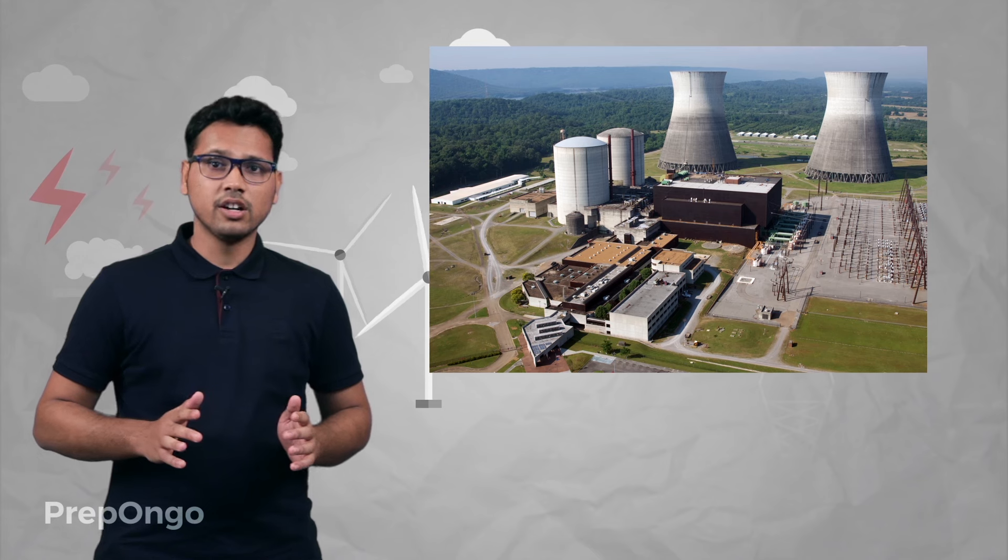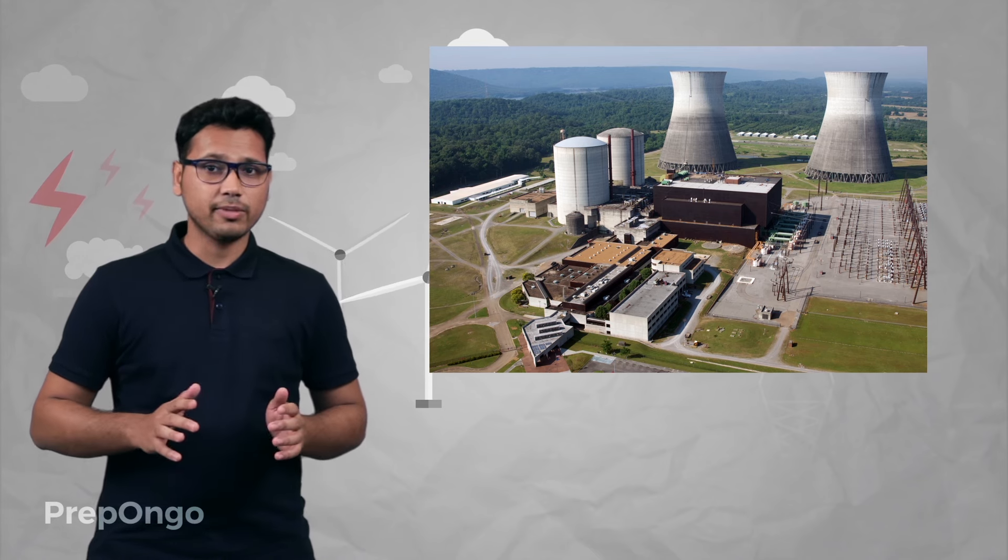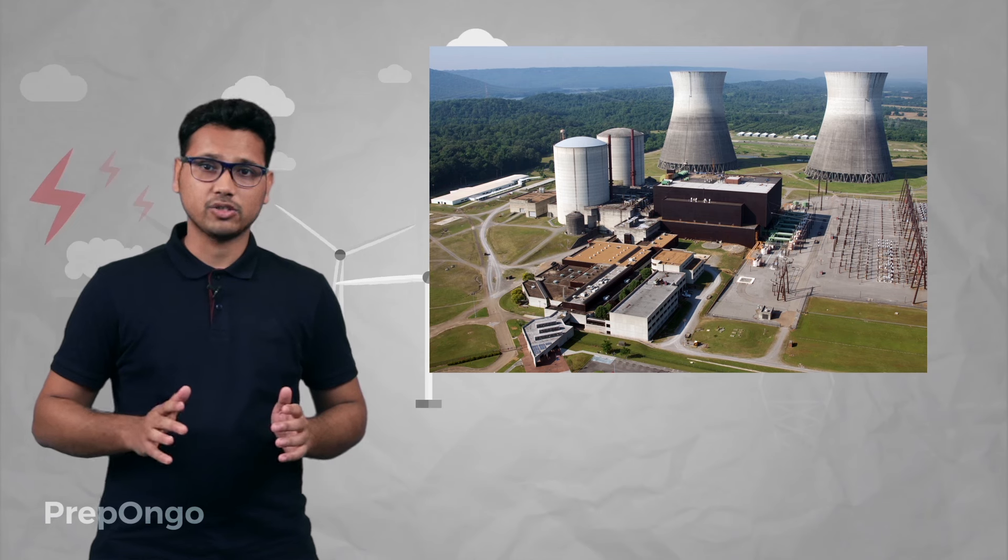The energy from nuclear reactions can be used in a controlled manner in nuclear reactors to produce steam from water, and then this steam can be used to run the turbines to get electricity.